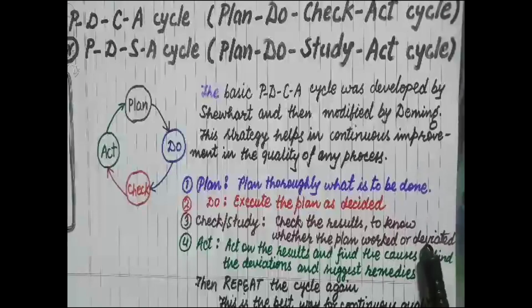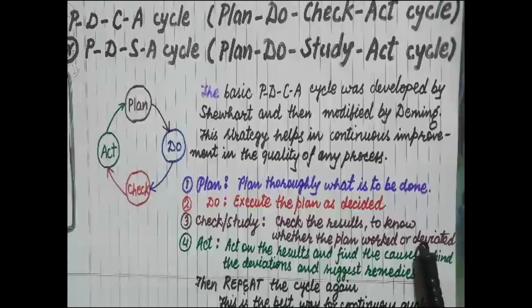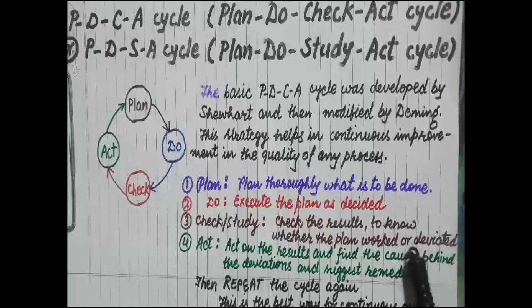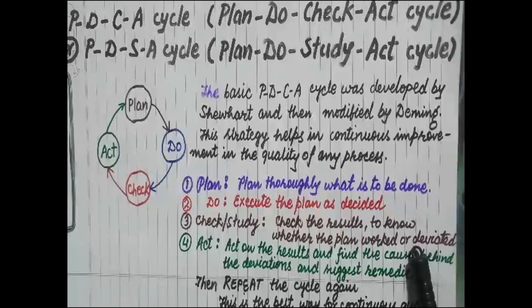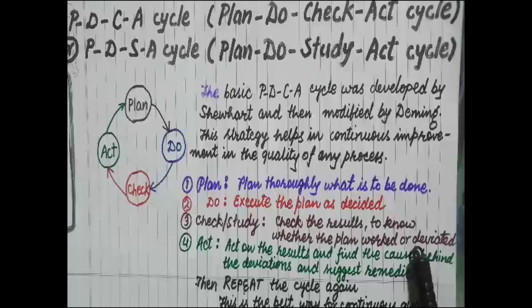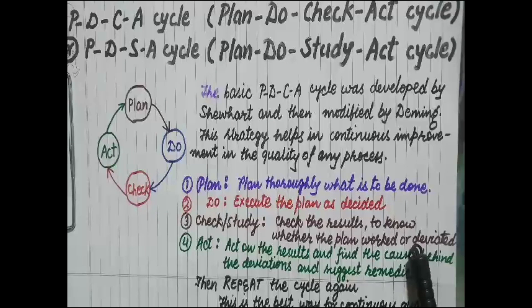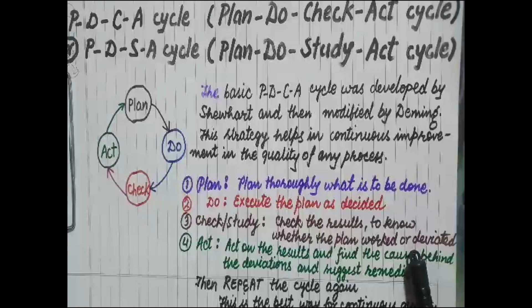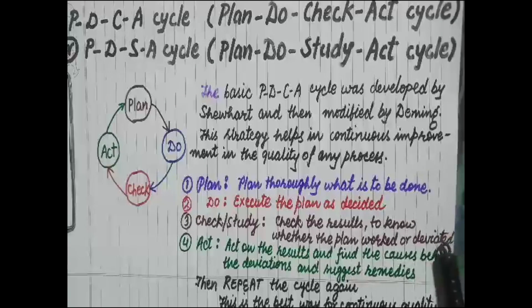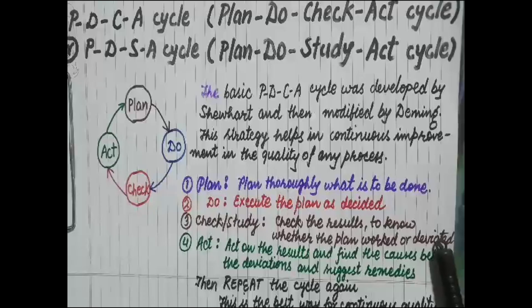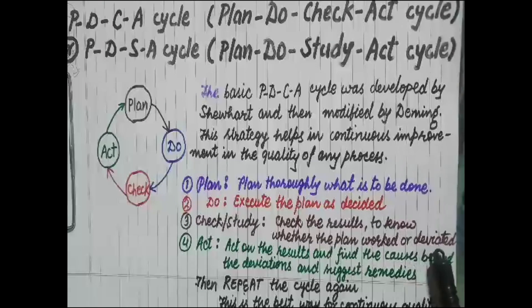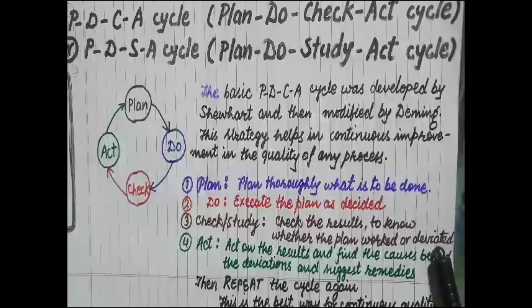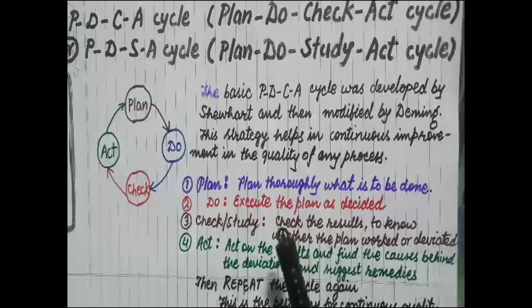If there is any deviation - suppose there is deviation in the surface roughness, the roughness is higher than intended, or the dimensions of the component are deviating from the desired plan - now comes